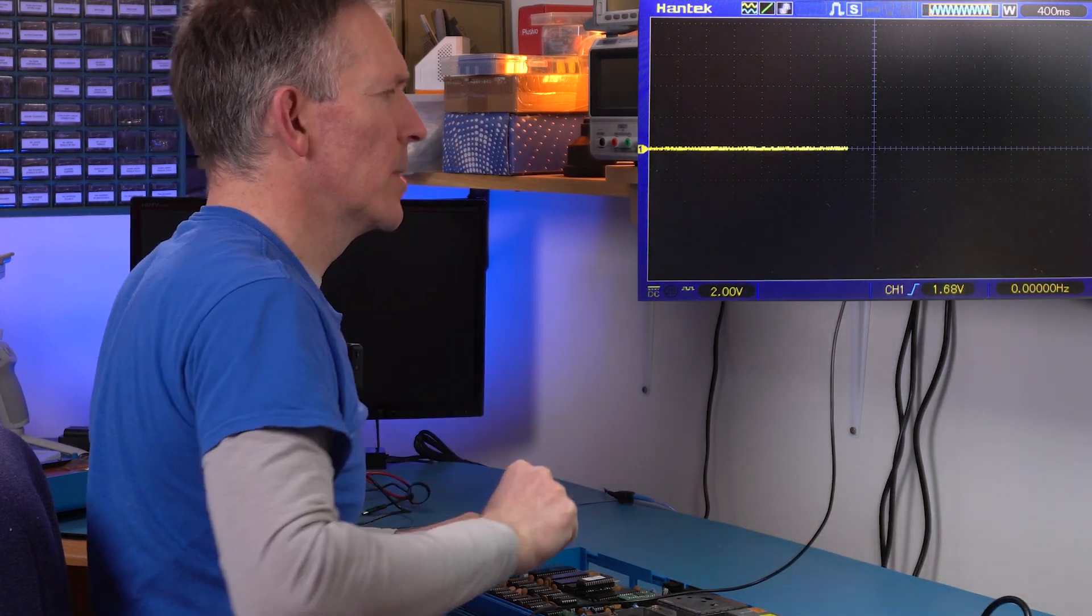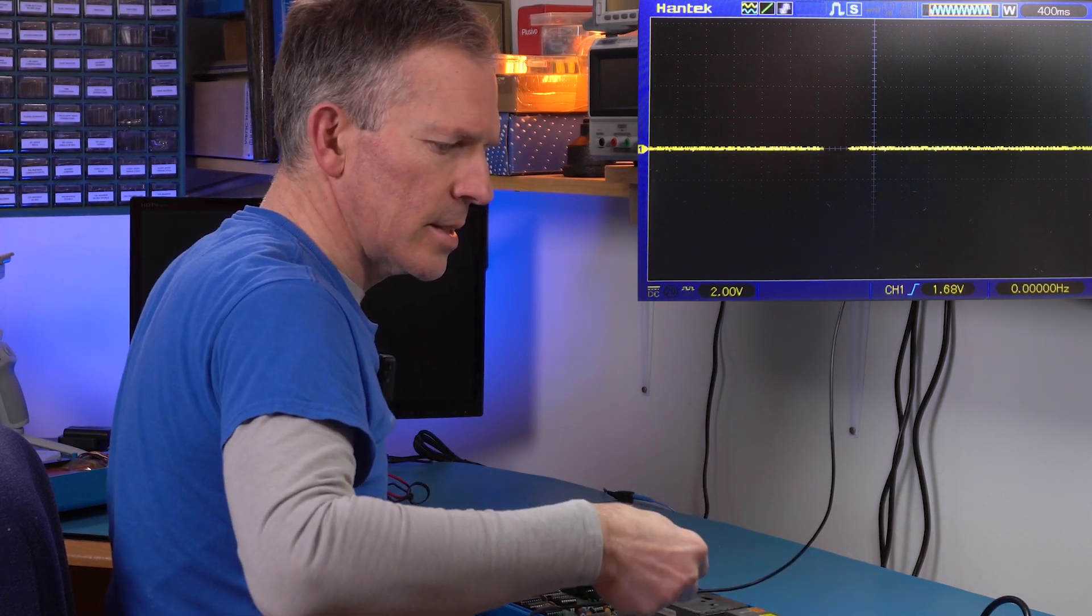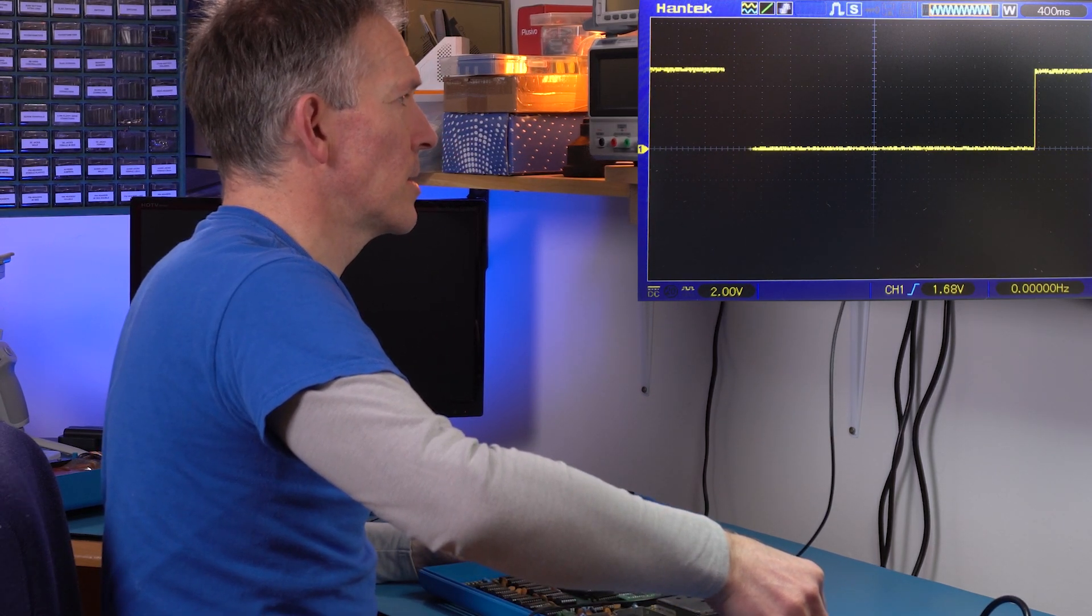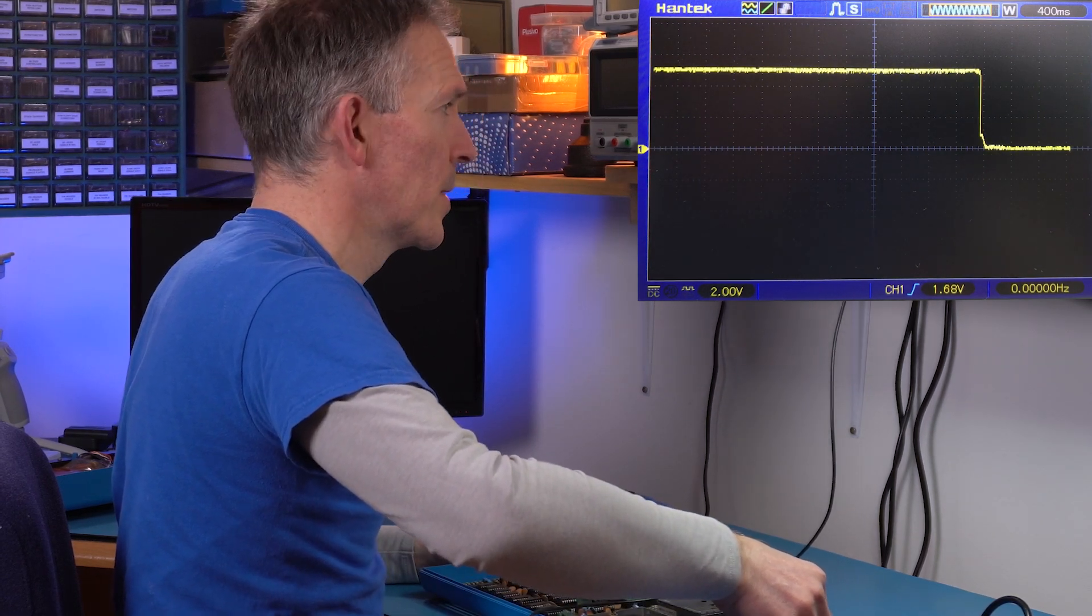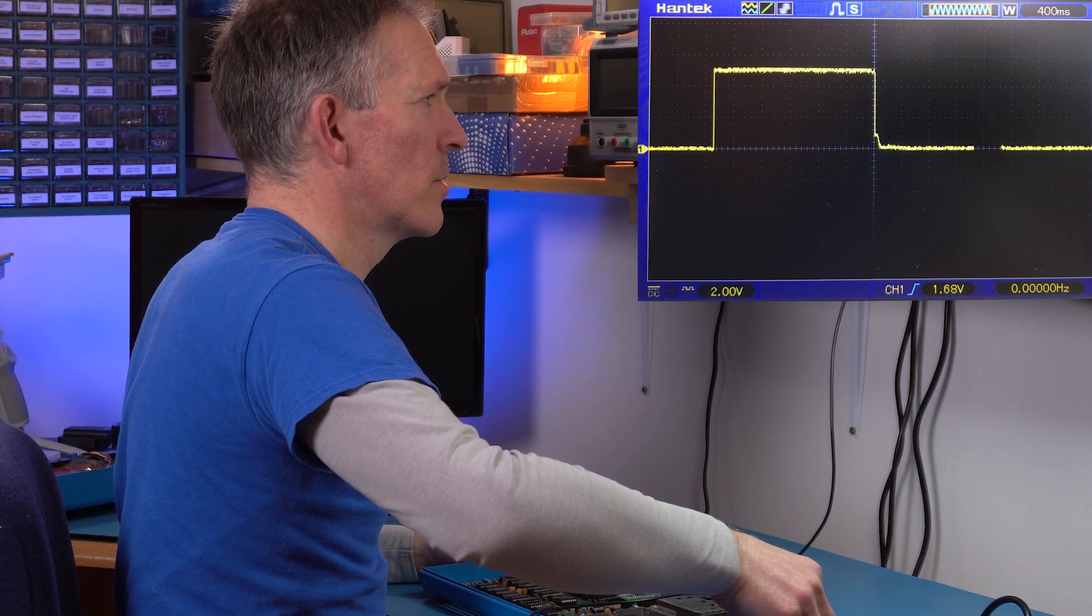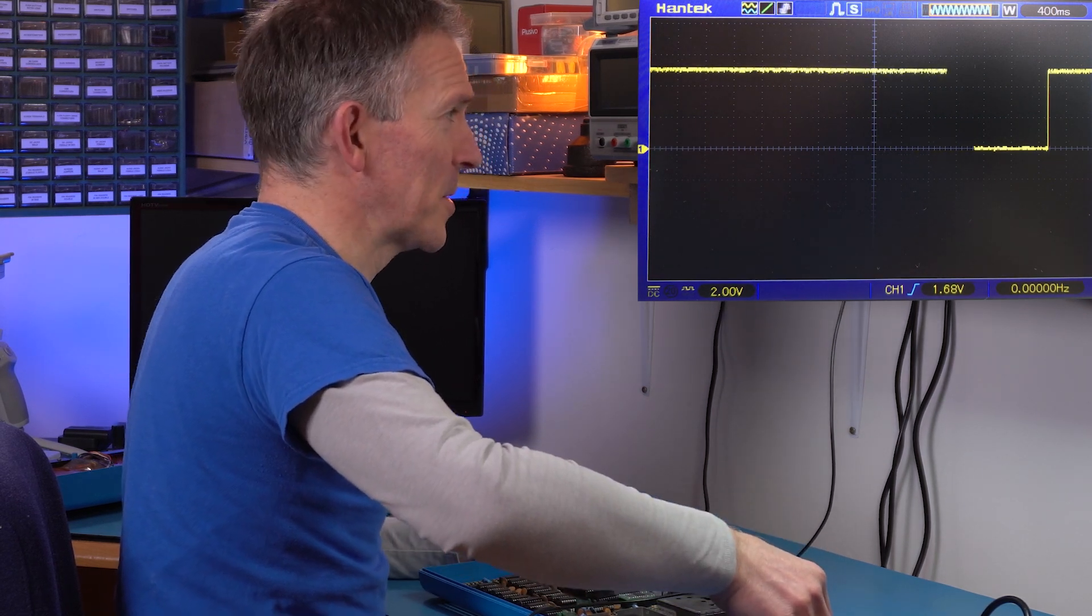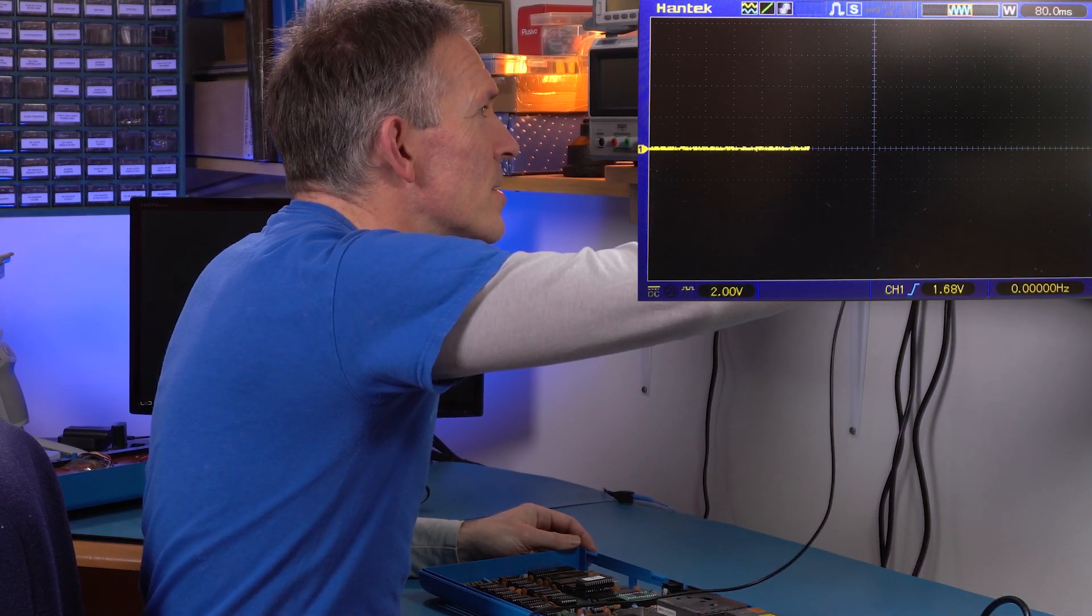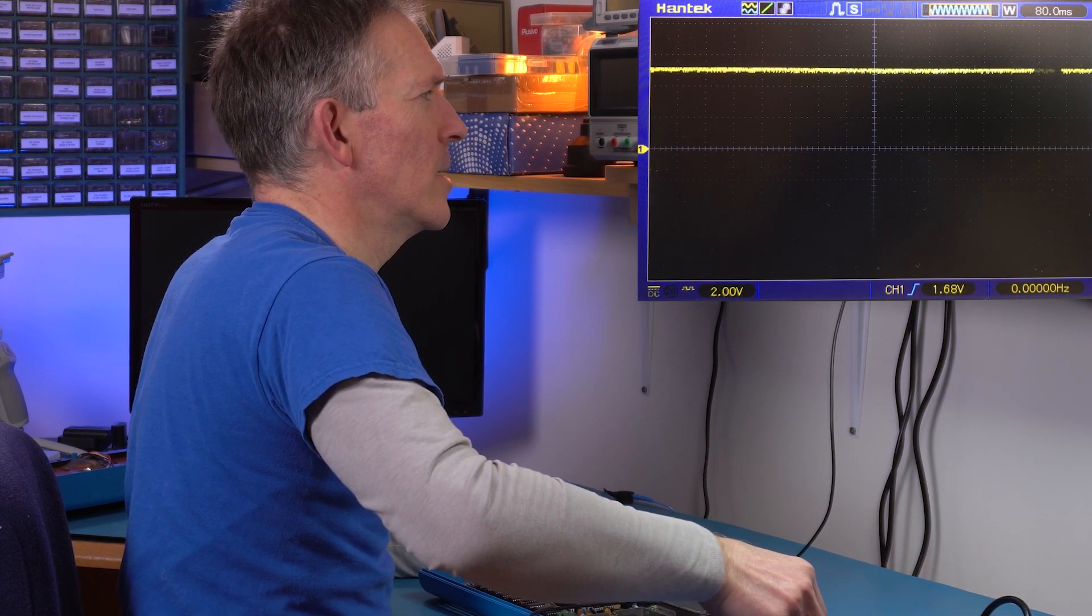Each of those divisions is 400 milliseconds, so we have several seconds worth. If I turn it on, this doesn't happen all the time. That looked to be a solid 5 volts. Turn it on again. Yeah, that seems very solid. Unfortunately this wasn't happening all the time, so it's going to make it more difficult.